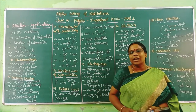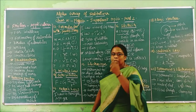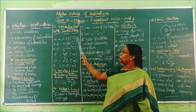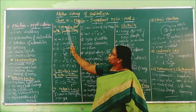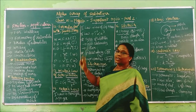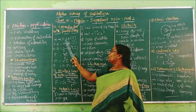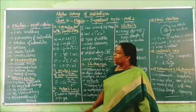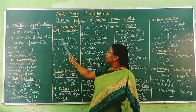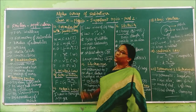Now there are some formulas. Based on these formulas I will write sums for you. W is equal to F into S. The formula for work is: work is equal to force into displacement. The unit of work is Joule.